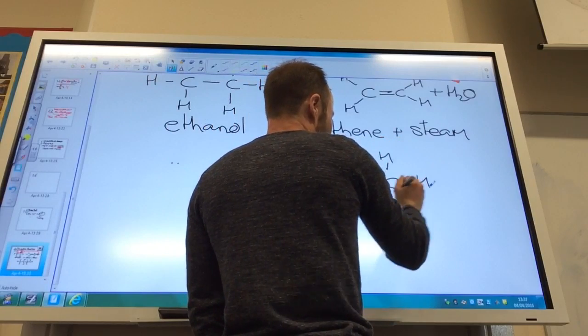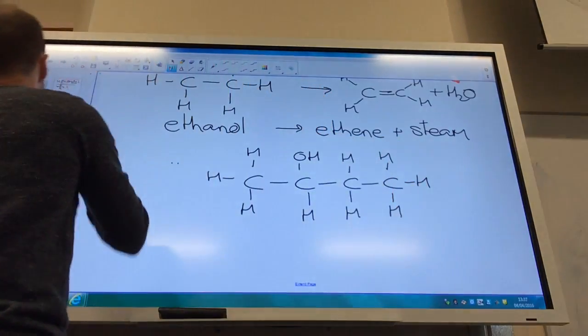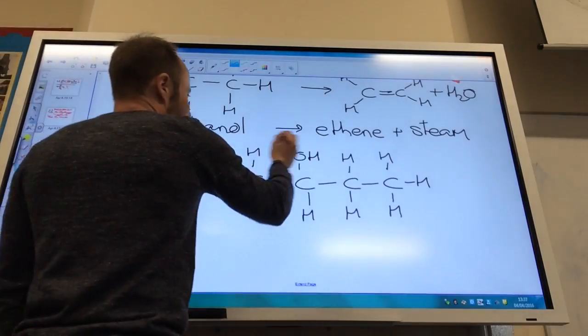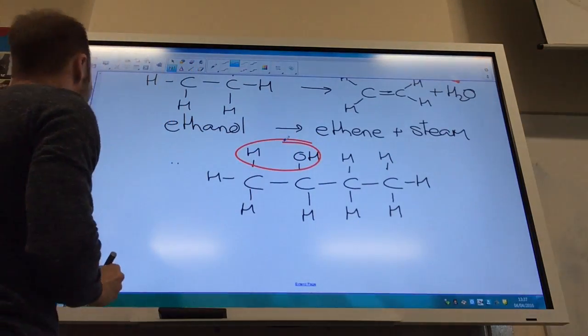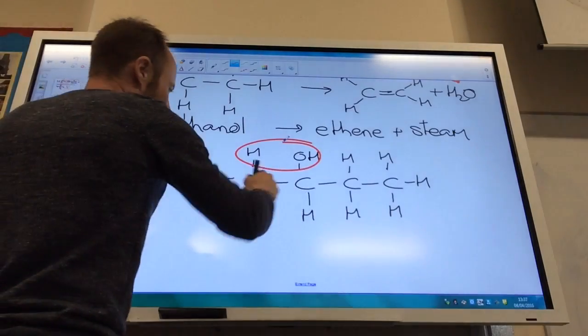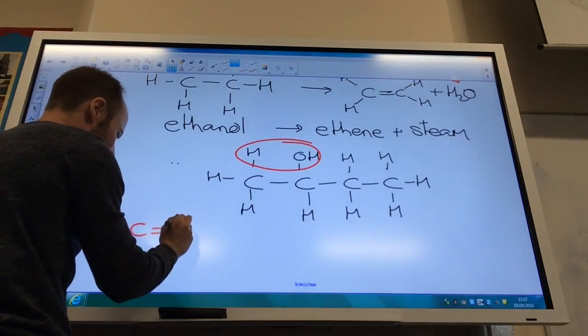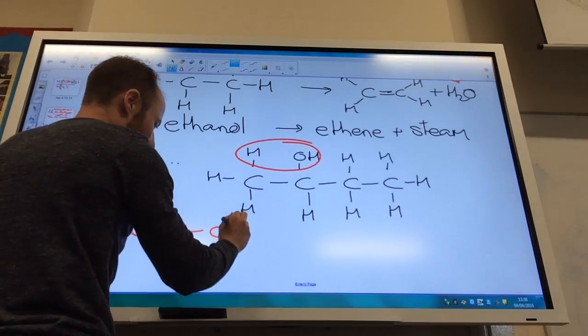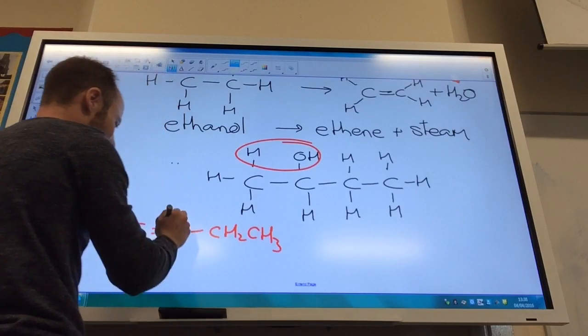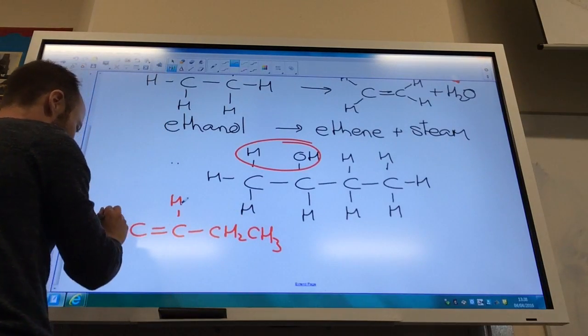So here's butan-2-ol, I'm going to eliminate water from here. I could eliminate that water there, in which case my double bond would be between these two carbons there. So I'd be making this guy here.